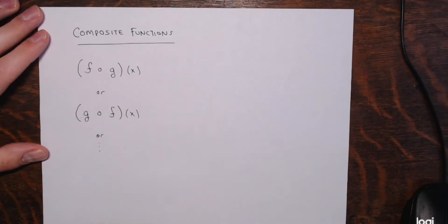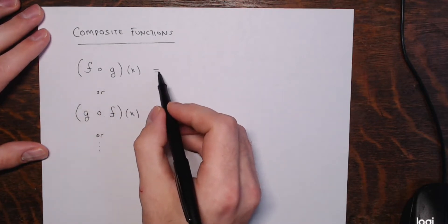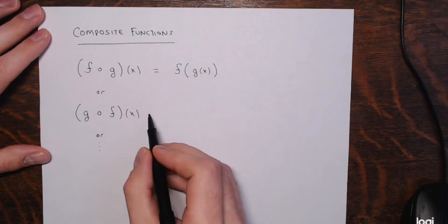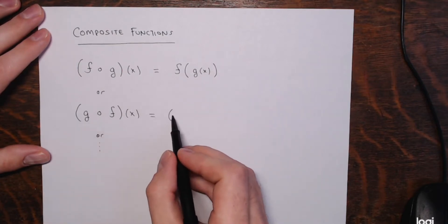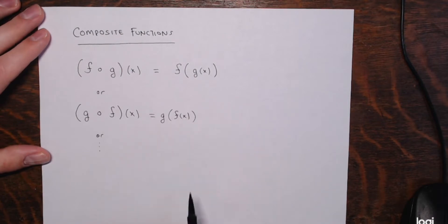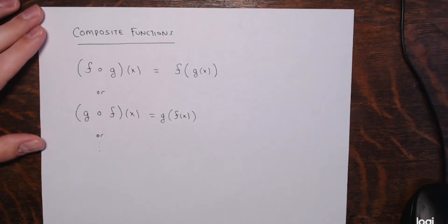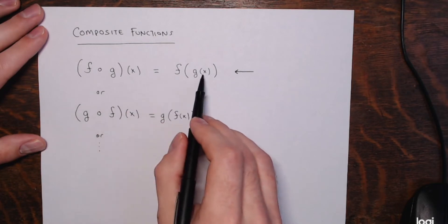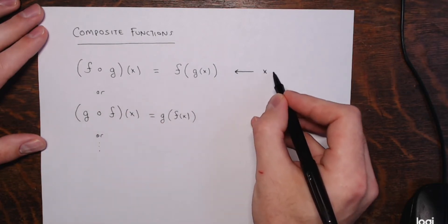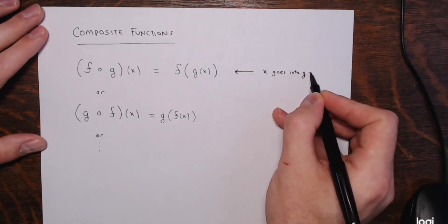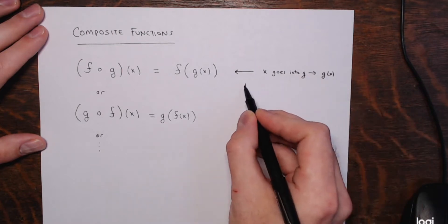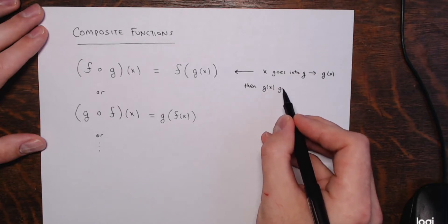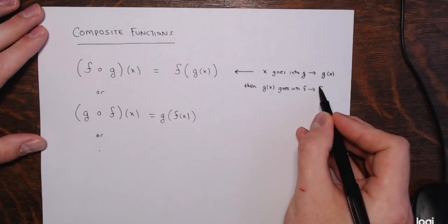There are multiple different ways to write a composite function. F composed with g of x can also be written as f of g of x. And g composed with f of x would be written as g of f of x. The order matters — the order in which the functions come matters. For f composed with g of x, first x goes into g, giving me an output g of x. Then that output g of x goes into f, giving me f of g of x as my final output.